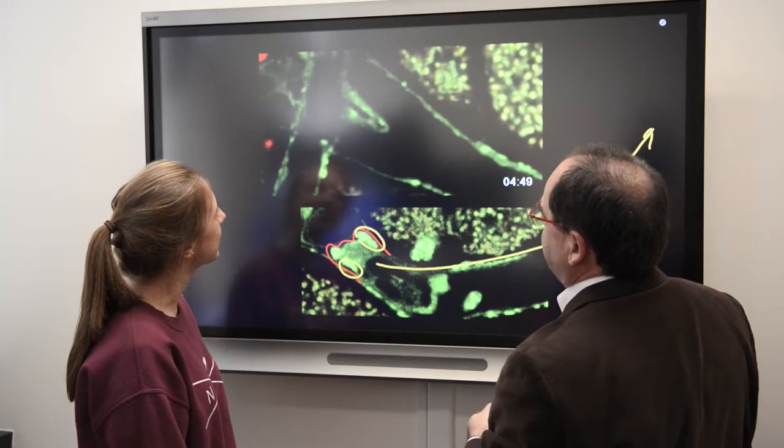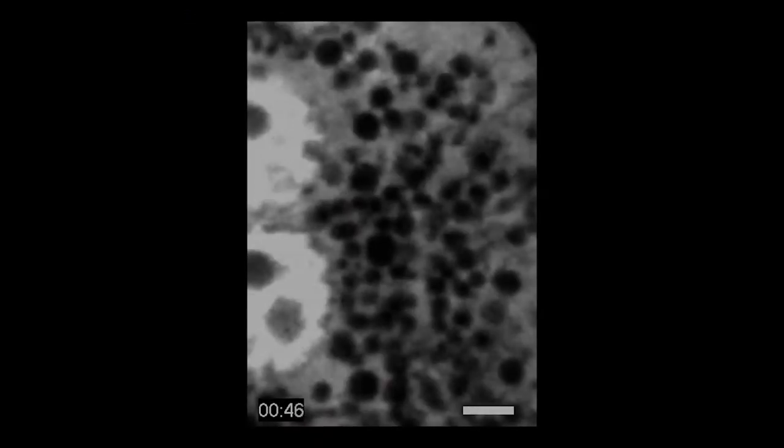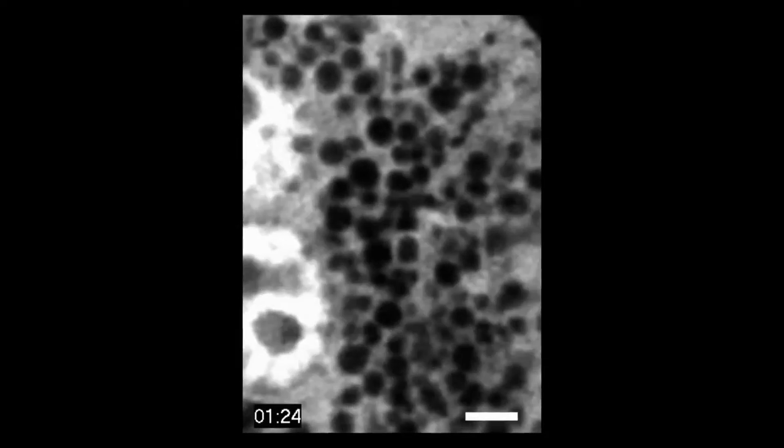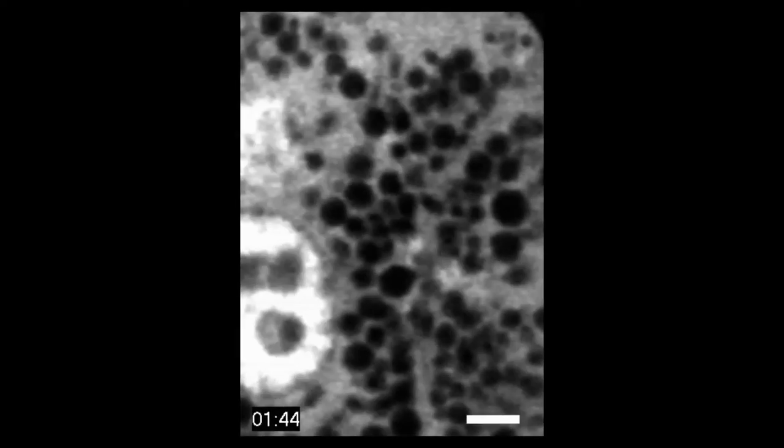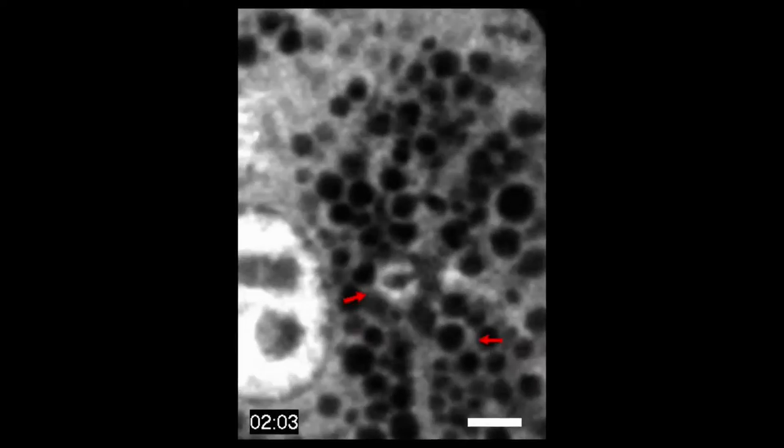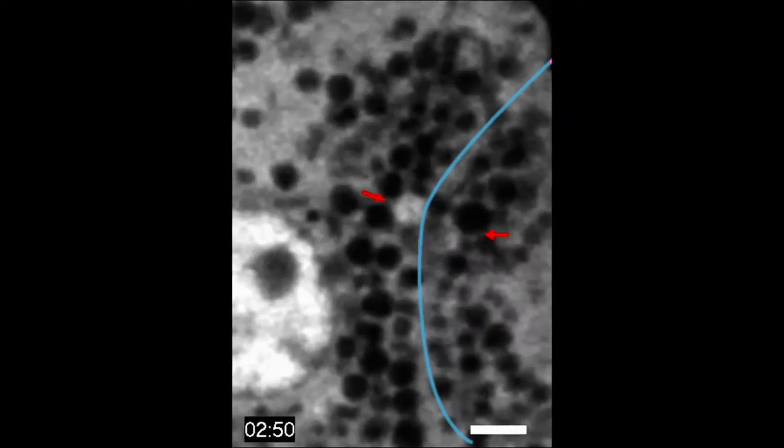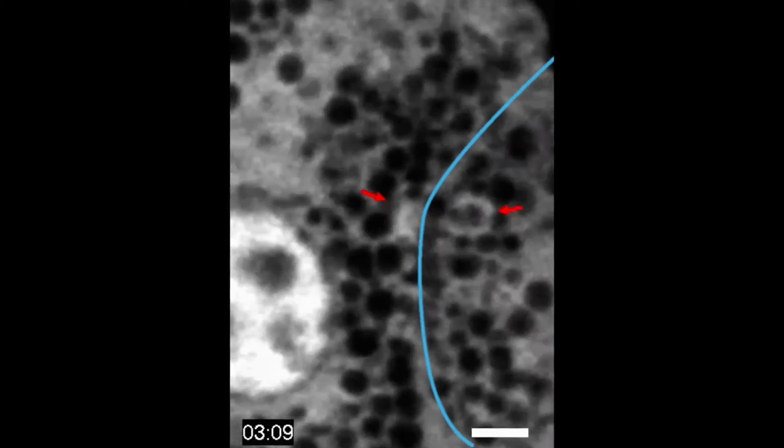This process cannot be reproduced in cell culture. In this movie, you can see secretory vesicles in the salivary glands, highlighted by the red arrows, that fuse and are integrated into the plasma membrane, the blue line. This is a beautiful example of membrane remodeling.